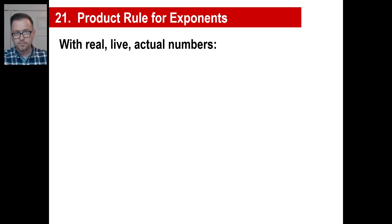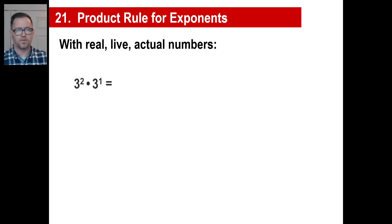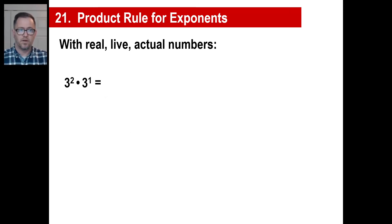So we test this stuff out with real numbers. If it works for actual numbers and anything we try, we can say it will work for anything — with what we call A or X or Y or whatever. So let's start this one out. You tell me: what is 3 to the second times 3 to the first? What's the actual answer? 3 squared is 9, times 3 is 27.